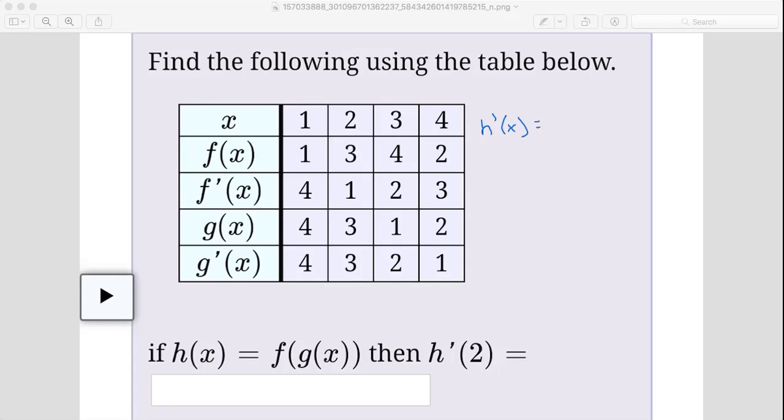The chain rule says that you have to take the derivative of the outside function leaving the inside function the same, so we can write that as f prime of g of x. That's the derivative of the outside function leaving the inside function the same, but then we have to multiply that by the derivative of the inside function, which is g, so we write that as g prime of x.